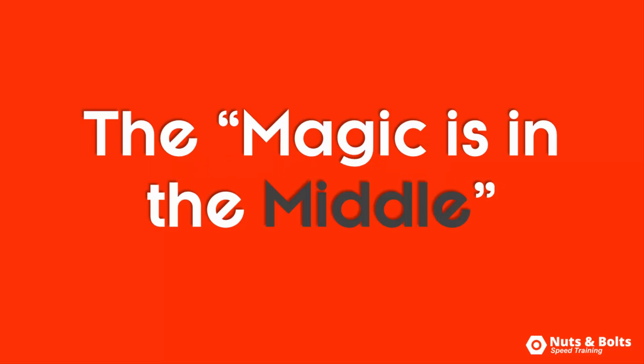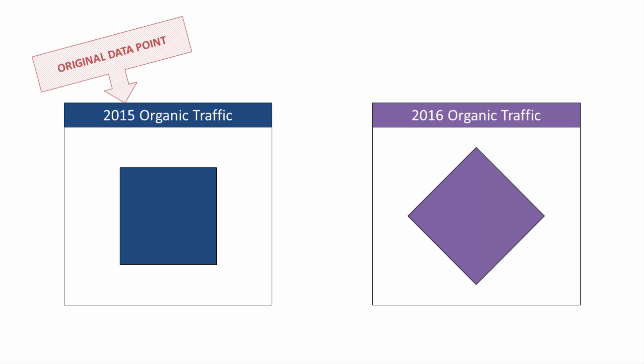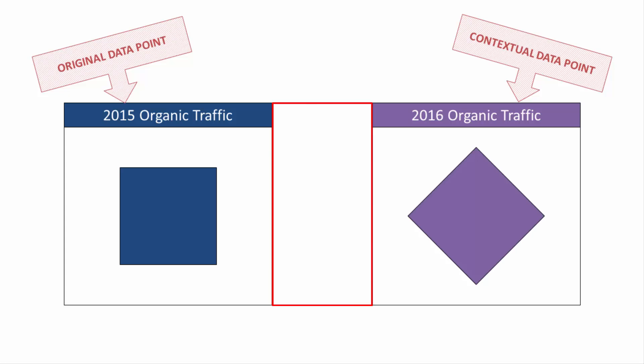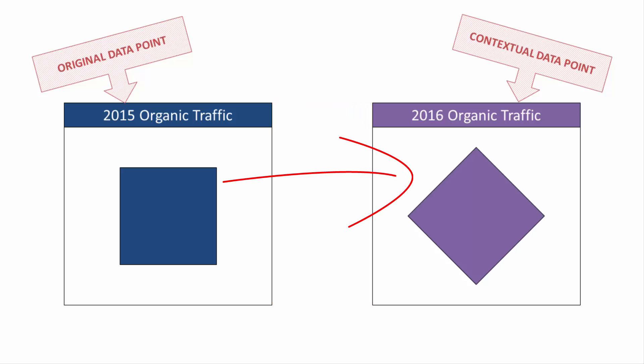Let me quickly try to explain this using shapes. So if this blue rectangle is my data point — my ratio, my factor, whatever — and this purple diamond is what I'm using for context, all of the space in between the two objects is the can of worms you want to open and resolve. That's your point. What happened so that the rectangle became a diamond? What do you recommend doing about our blue rectangle compared to their purple diamond, and why? Is it good to be purple? Is it good to be blue? Is our color good but you recommend changing our direction so we're also a diamond? It could be a bunch of different things, but that's what I mean by the magic is in the middle.